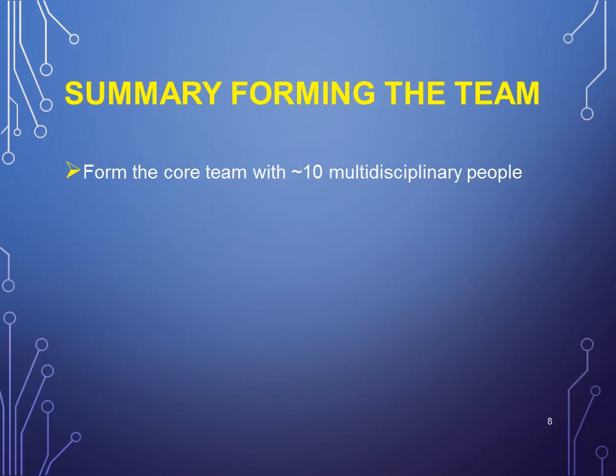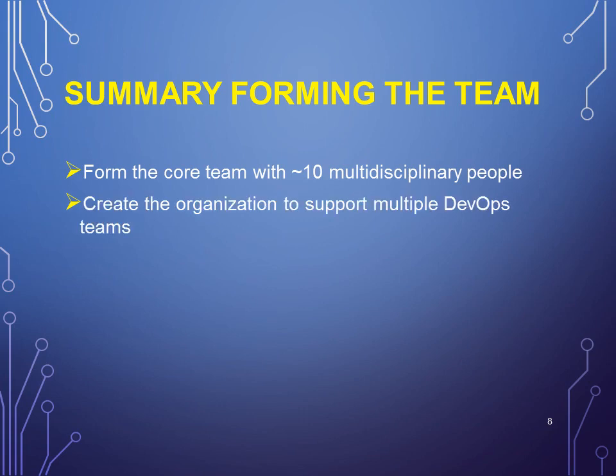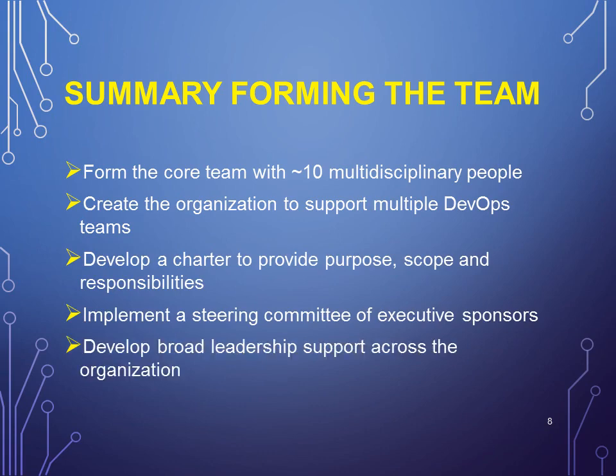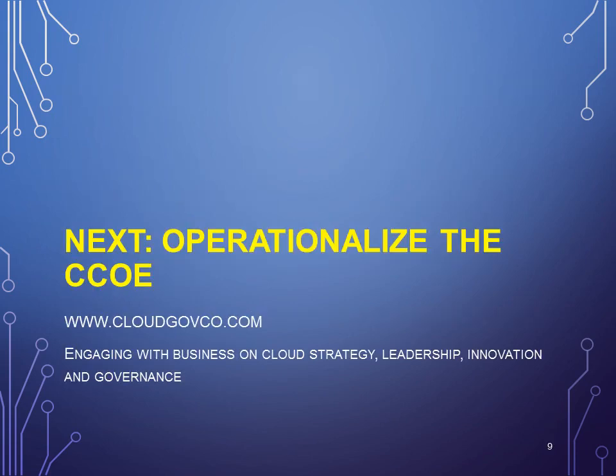This is the end of the module on forming the cloud core team, which should be around 10 multidisciplinary people. After that, create the organization to support multiple DevOps teams. Develop a charter to provide purpose, scope, and responsibilities. Implement a steering committee of executive sponsors, and develop broad leadership support across the organization. If you're following this series in sequence, the next module is about how to operationalize the cloud center of excellence. Thank you for your attention.